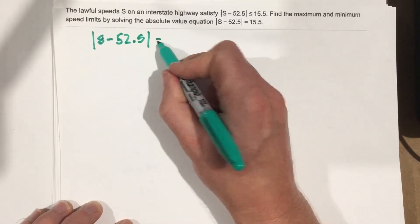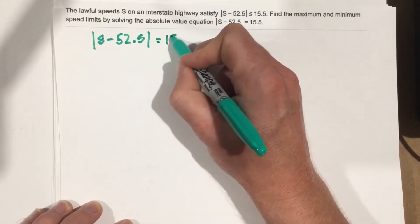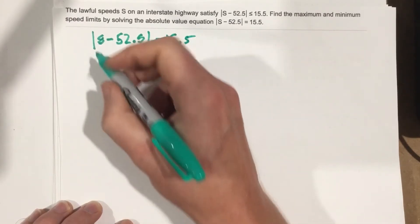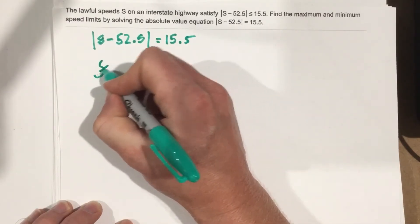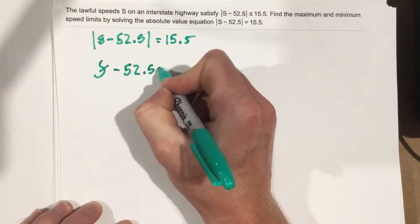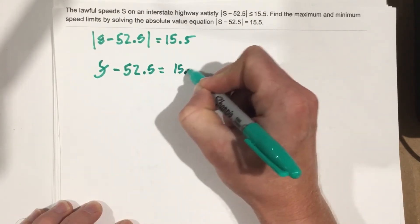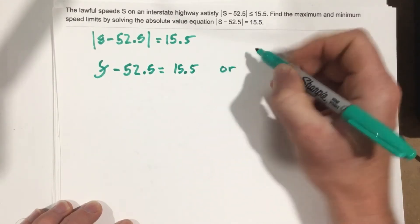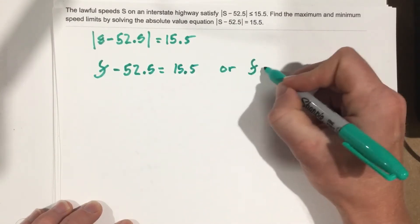Equals 15.5. So we've got to solve this. We'll say s minus 52.5 equals 15.5, or s minus